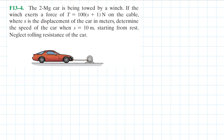In this problem we have a two thousand kilogram car — that is our mass. This mass is being towed by a winch. The winch exerts a force on the cable that causes tension, given as a function of position: F(s) = 100 times (s + 1) on the cable, where s is the displacement of the car in meters. Determine the speed of the car when the position s equals 10 meters.